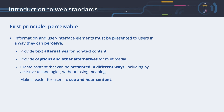First principle: Perceivable. Information and user interface elements must be presented to users in a way they can perceive. The guidelines for this principle are: to provide text alternatives for non-text content, such as alternative descriptions for images; provide captions and other alternatives for multimedia, such as text transcripts, captions, sign language, or audio descriptions; create content that can be presented in different ways, including by assistive technologies, without losing meaning; and make it easier for users to see and hear content, for example by the selection of colors, choosing a sufficient contrast, or having resizable text.